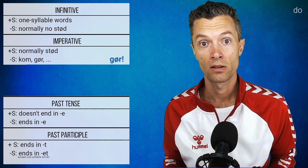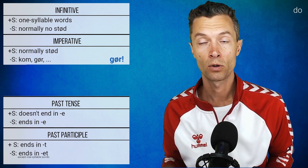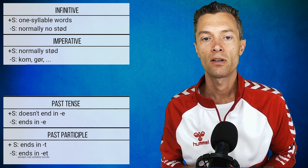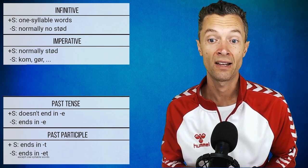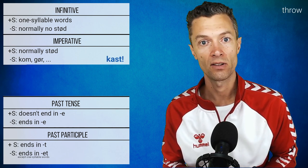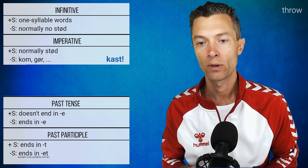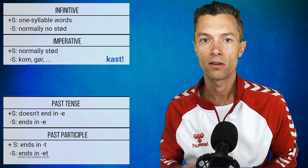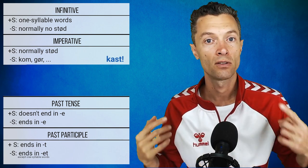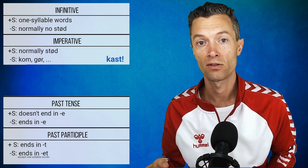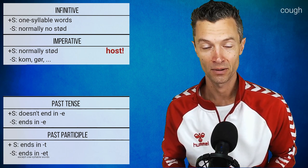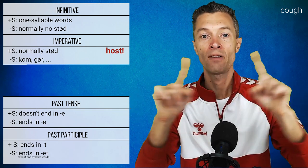Also, 'gør' does not have stød — we say 'gør' not 'gør'. Other examples without stød in the imperative are 'test' and 'kast', because there are no stød bases — short vowels and the consonants s, d, t are not part of the stød bases. However, 'host' does have stød because it has a long vowel — the 'o' — giving us 'host' with stød.